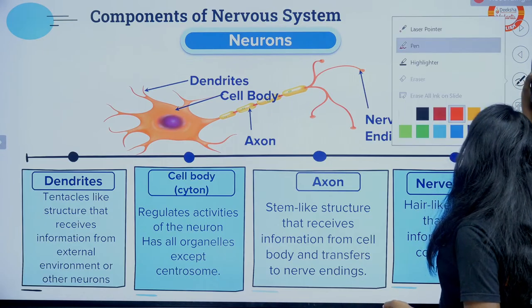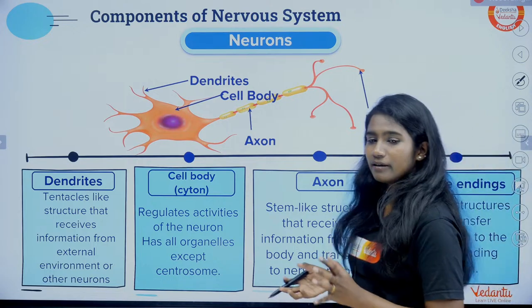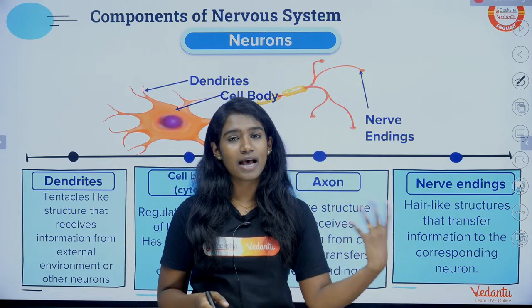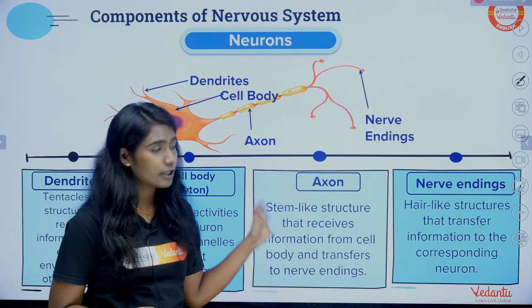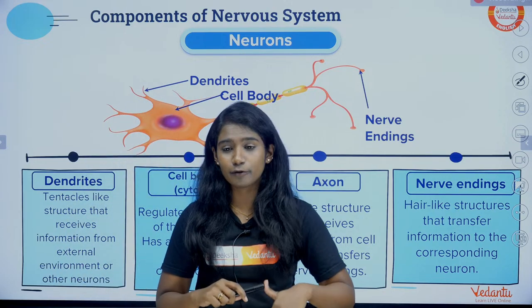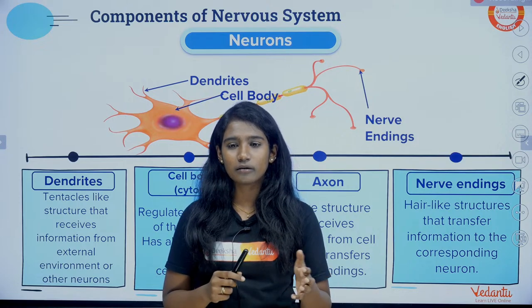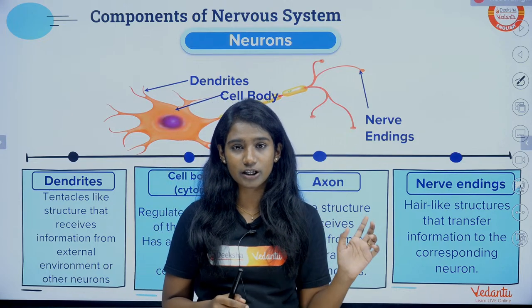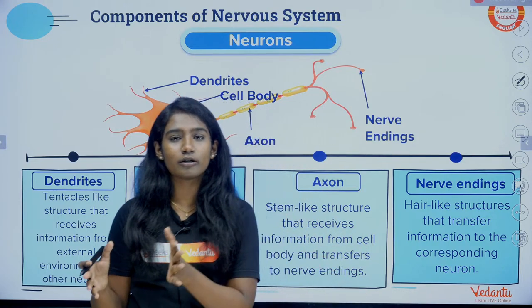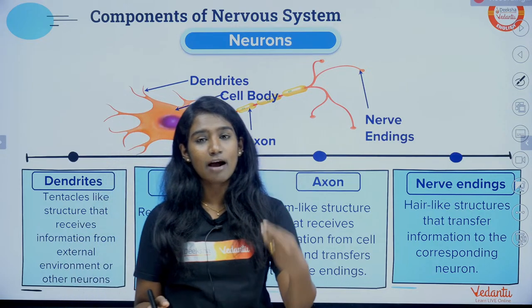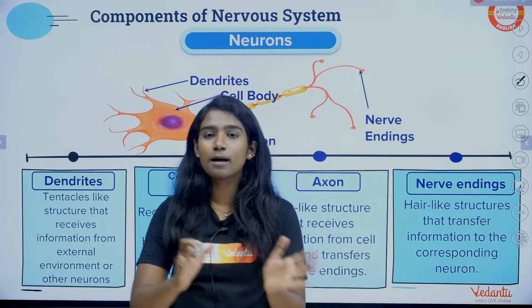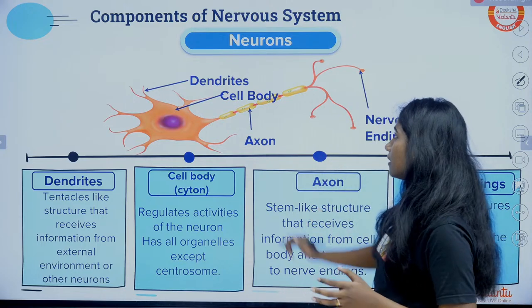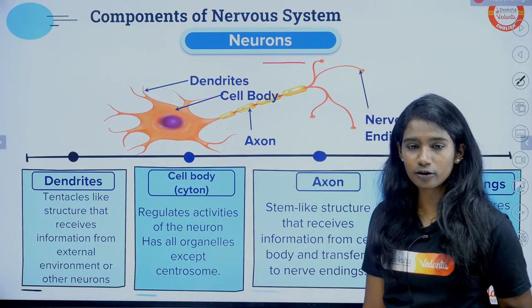The first important diagram in this chapter — when you compare this chapter with the life process chapter, life processes has many more diagrams. In this chapter, the structure of neuron can be asked for two or three marks, not more than that. The reflex action diagram is important. The brain diagram is not mostly asked; instead you will have to remember the parts of the brain and their functions. The first topic is the structure of the neuron.